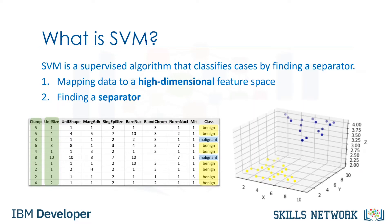We can transfer this data to a higher-dimensional space, for example, mapping it to a three-dimensional space. After the transformation, the boundary between the two categories can be defined by a hyperplane. As we are now in three-dimensional space, the separator is shown as a plane. This plane can be used to classify new or unknown cases.